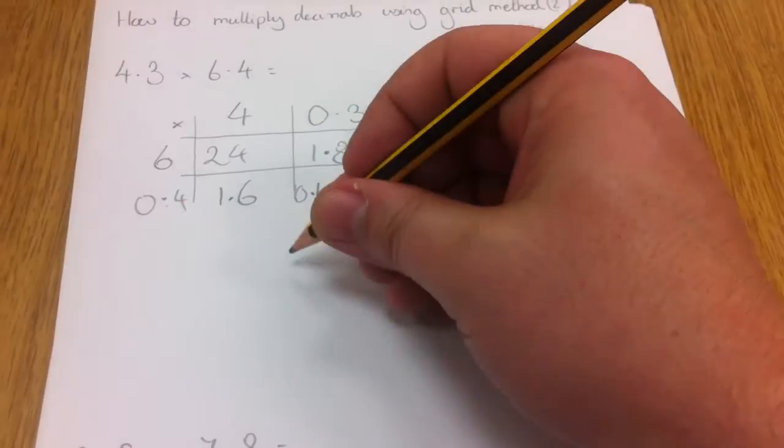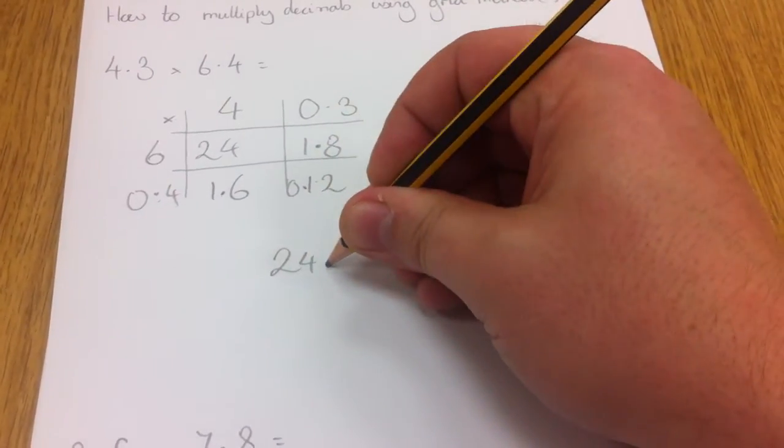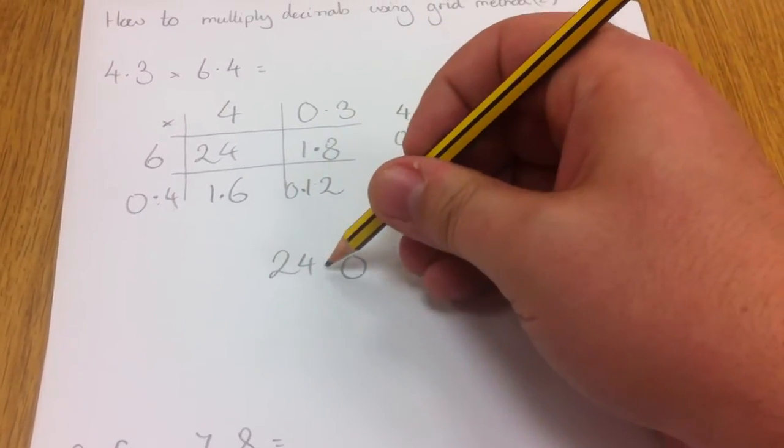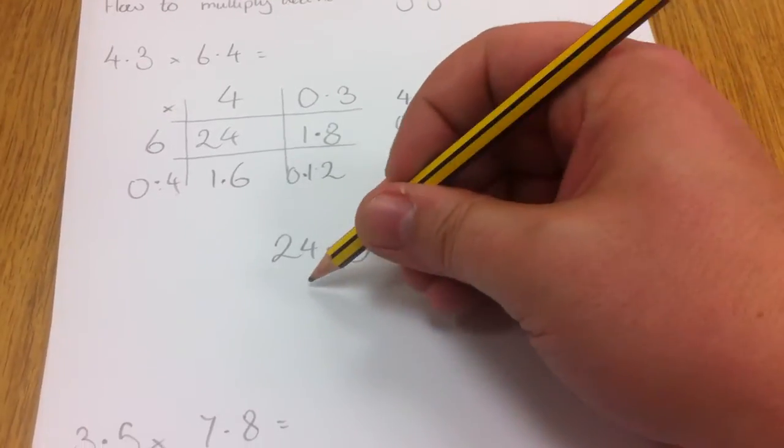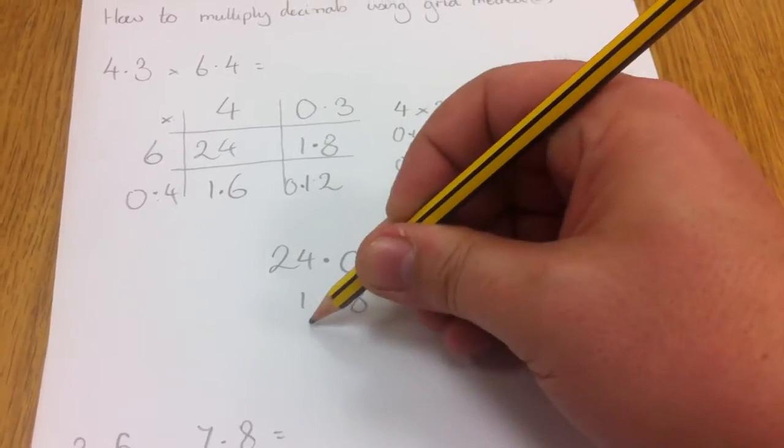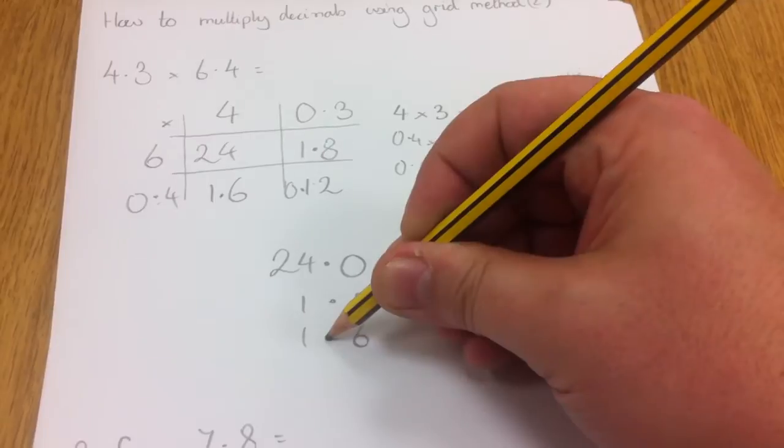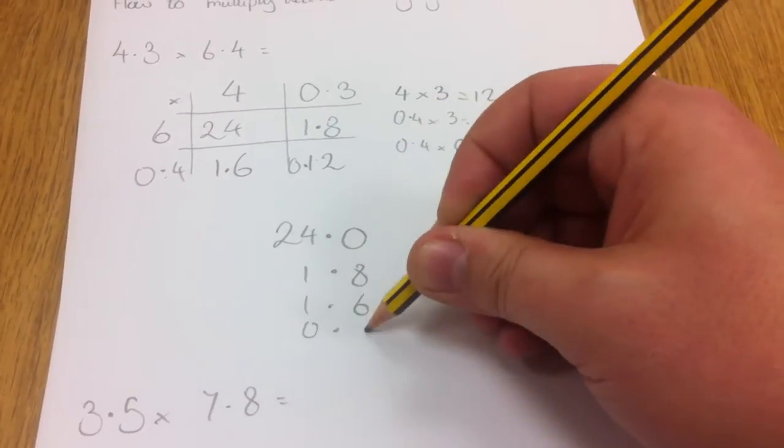And all I've got to do is add the numbers up. So I have 24. Again, just to make sure the decimal point is in the right place, I'm going to put one at the end of my 24, 1.8, 1.6 and 0.12.